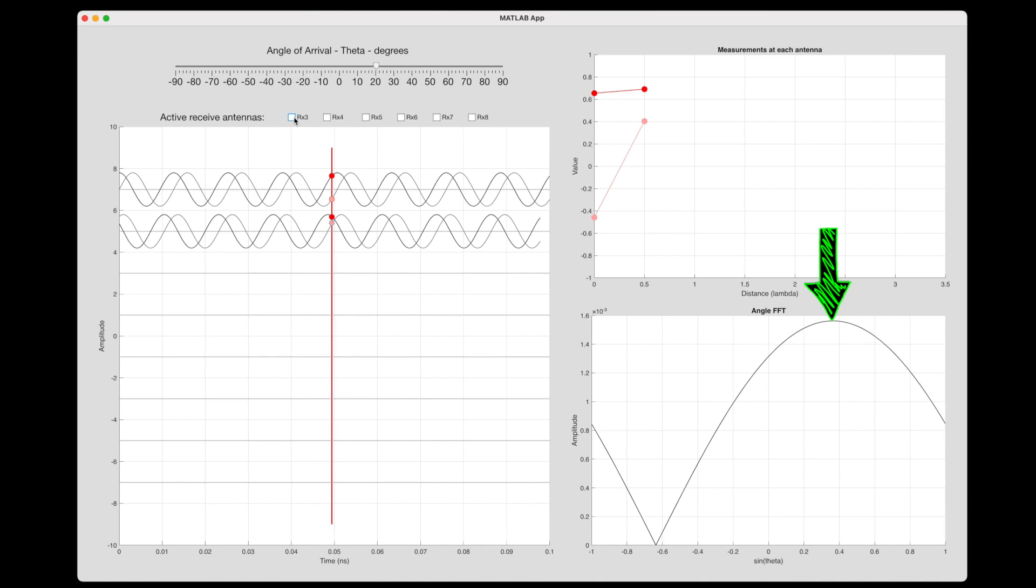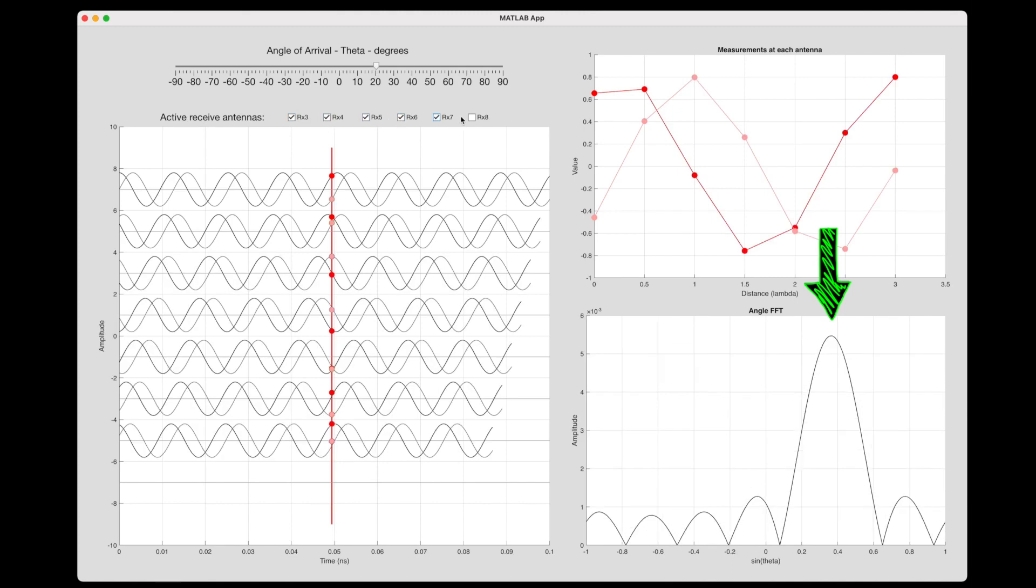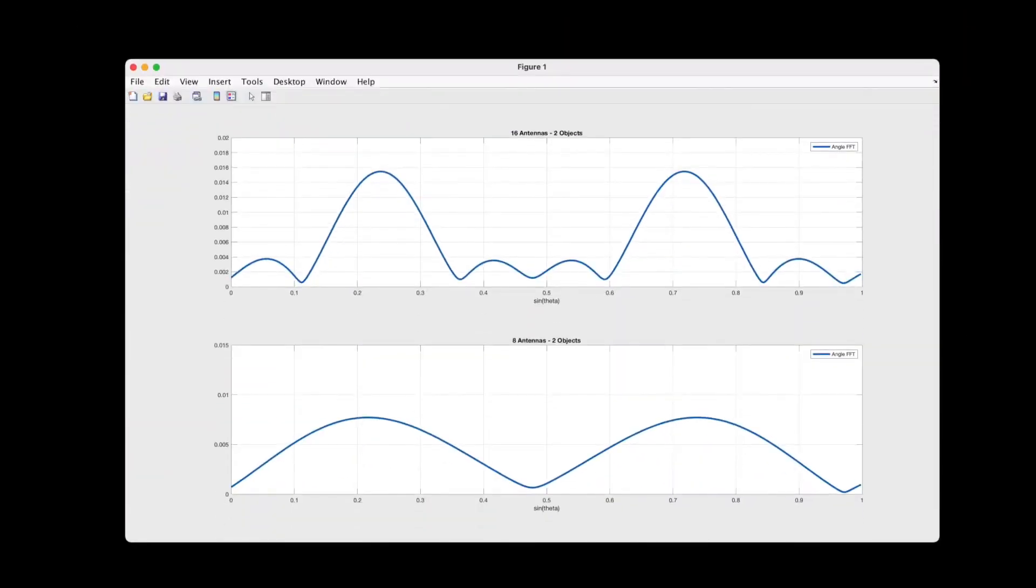Let me show you what this looks like in this example. I have two objects that are separated by about 30 degrees or so. The above plot shows the angle FFT of a radar system that uses 16 receive antennas, and it has these narrower peaks. The lower plot only uses 8 and has wider peaks. And you can see that in both cases the two objects can be resolved, since there are two distinct peaks.